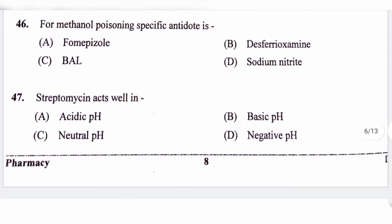Question number 47. Streptomycin acts well in: option A, Acidic pH; option B, Basic pH; option C, Neutral pH; option D, Negative pH. The correct answer is option A, Acidic pH. Streptomycin for injection should be between pH 4.5 to 7.